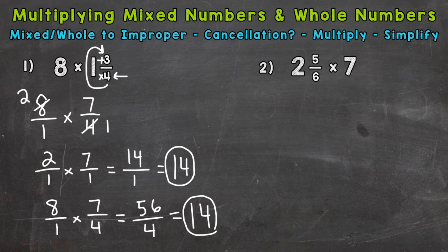So you can see that we got the same answer. On to number 2, where we have 2 and 5 sixths times 7. So again, first thing we need to do is change or convert our mixed numbers and whole numbers to fractions. So let's do our mixed number here. Start at the bottom. Multiply and add.